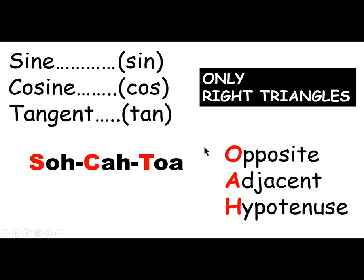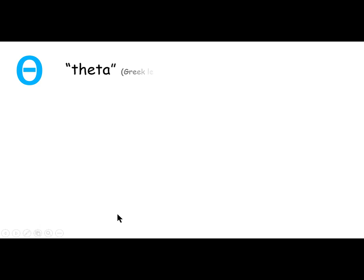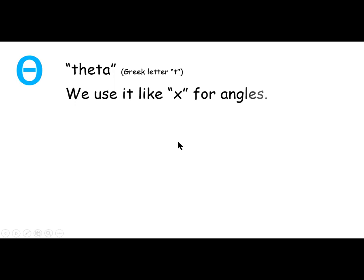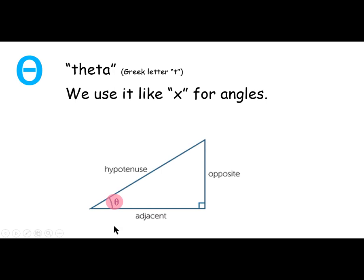There's one other thing you've got to know: this funny symbol — the Greek letter theta, a zero with a line through it. Theta, the Greek letter, gets used just like we use X, but for angles. When we have a triangle and we're talking about its angles, if we don't know the angle measures, we use Greek letters. So instead of putting an X for an unknown angle, they use theta to represent angles whose measure we don't know.